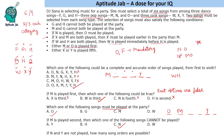Question 5: If n and y are not played, how many song orders are possible? Since y is not played, w and x are played from the rock category. O and m are played from pop since n is not played. Since m and g cannot both be played and m is played, g is excluded — so f and h are played from the dance category.